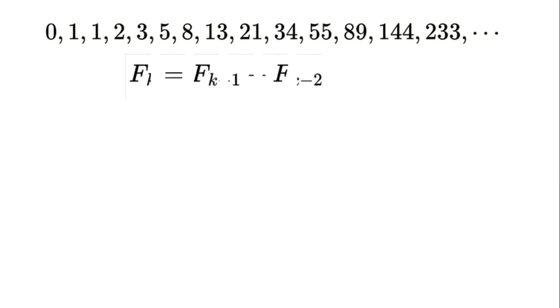Let's get started. The Fibonacci sequence is defined by a simple rule: each number is the sum of the two numbers before it. Mathematically, we write this as f(k) = f(k-1) + f(k-2). We also know the starting points: f(0) = 0 and f(1) = 1. Our goal is to find a general formula for f(k), a way to calculate any Fibonacci number directly without adding up all the previous ones.